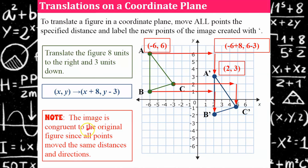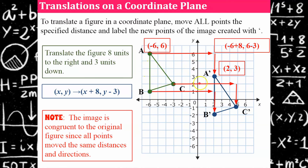Note that the image is congruent to the original — all sides are the same, all angles are the same. All points moved the same distance in the same direction.